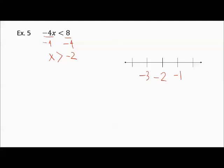So in this case, x is greater than negative 2, so we're going to put an open circle at negative 2 and go over to the right.